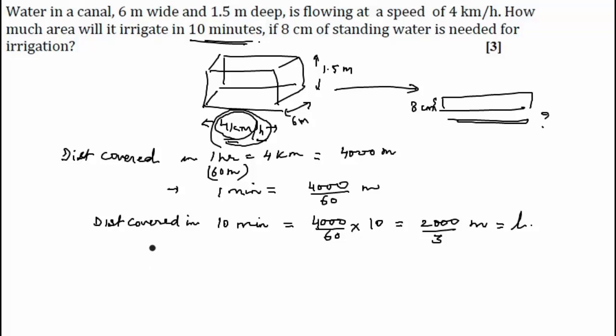And this will help us to find the volume. So now we will write therefore volume of water needed to irrigate field in 10 minutes. This means that in 10 minutes how much water is coming out from here and this will be used to irrigate this field.